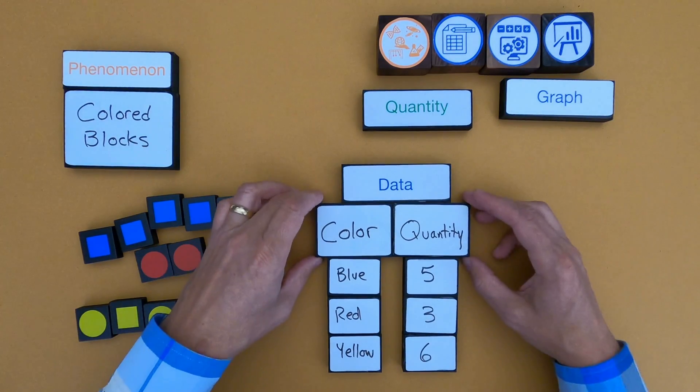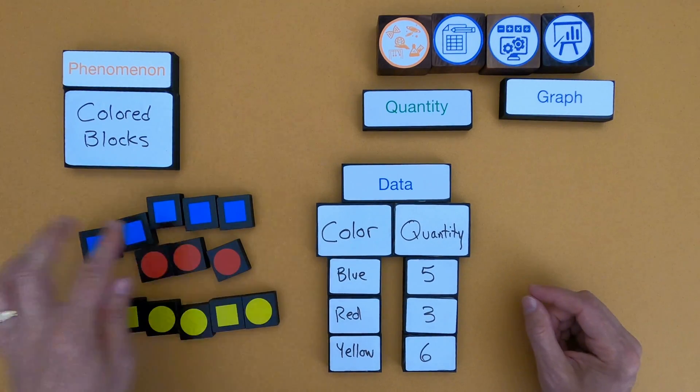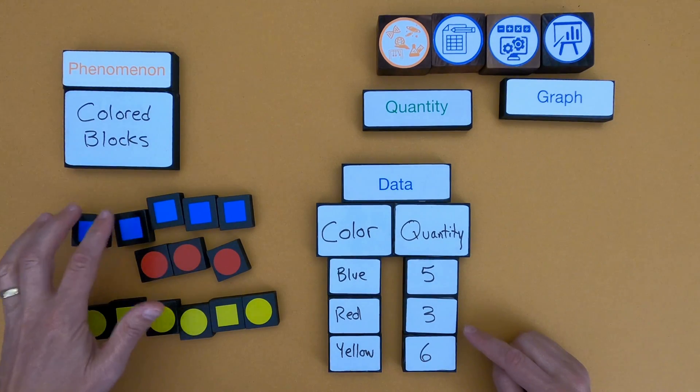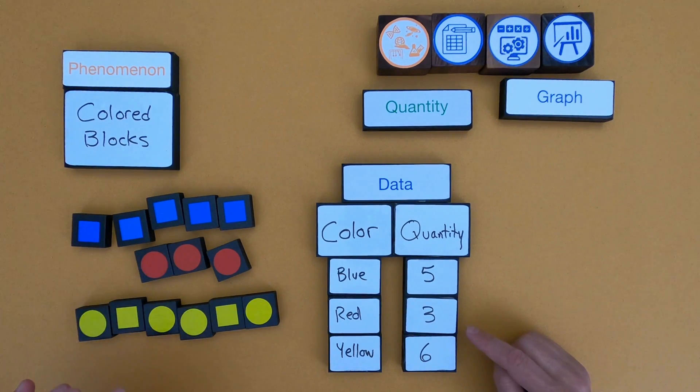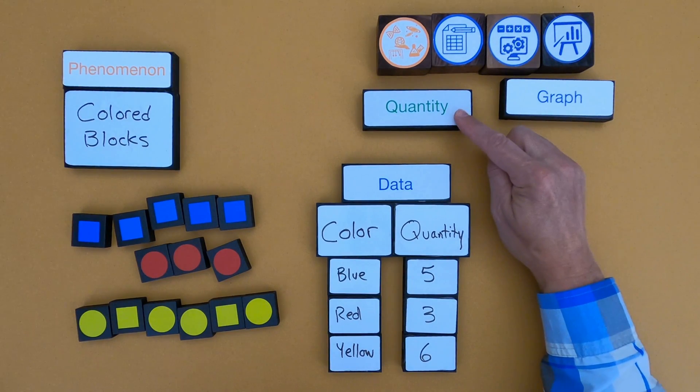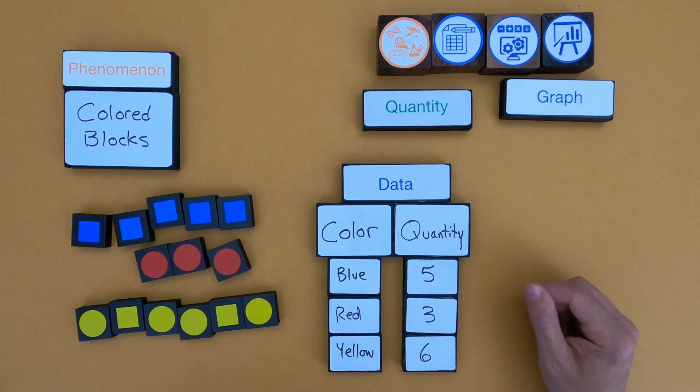Okay, so in my data table I have both qualitative data, that's the color, and it's the color of the shape on the front. So we've got blue, we've got red, and we've got yellow. And I also have quantitative data. That's going to be data that includes a number. So there are five blue, or three red, or there are six of the yellow. And so what I've created now is a data table that contains quantity. If you really want to add rigor to the science that you're doing, then add numbers to it. Add math to it, which is what science is really built on.